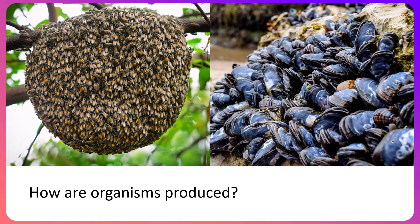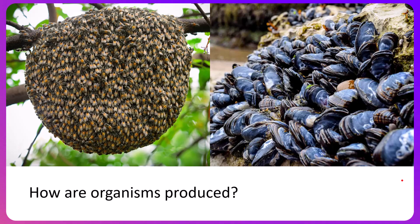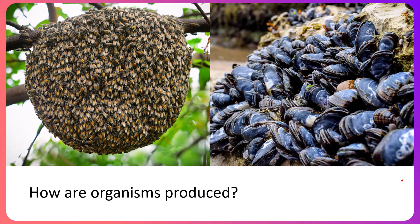To start, we want to set the stage on what scientists and the world believed about life prior to our understanding of cell biology. When we think about cell biology, we have to understand that we're looking at a level below what the naked eye can see, and that created challenges early on in science. We pose the question: how are organisms produced? If you go out for a stroll in your local park or backyard, you typically see organisms at the organism level, but we don't really see with the naked eye all of the microorganisms or single-celled organisms or even the cells that make up the multicellular organisms around you.